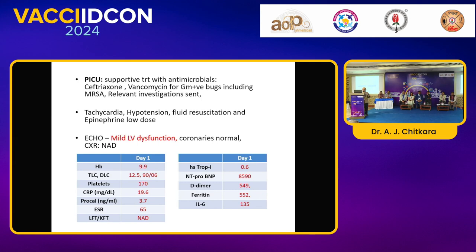LFTs and KFTs were okay, but cardiac enzymes were very high, including a pro-coagulant state with elevated D-dimers. IL-6 was high, and this was during a COVID season. So Dr. Anurag, you have seen MIS-C — is this compatible?